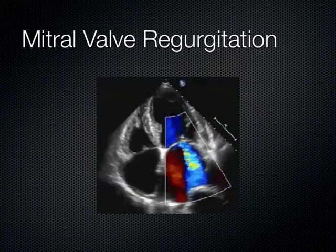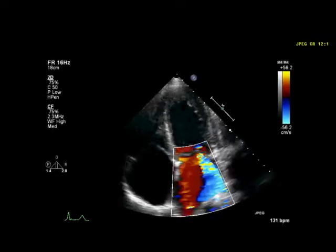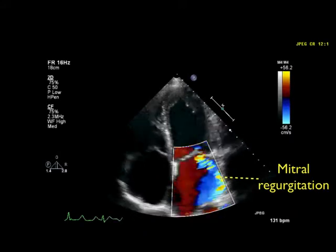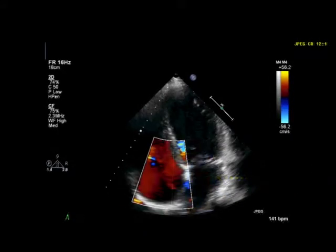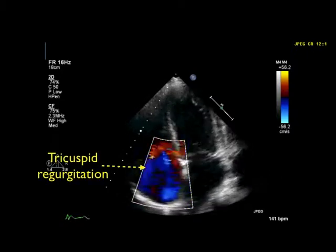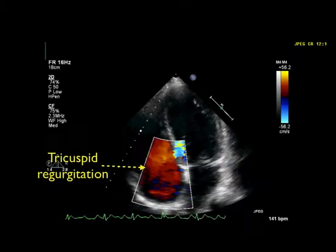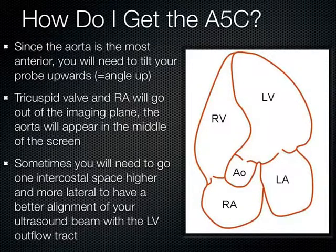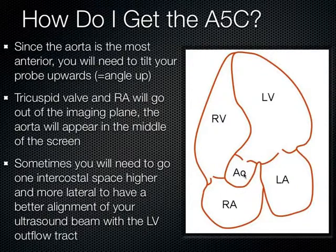The more parallel you get, the better Doppler works. This is just another example of a blue jet hitting the back wall of the left atrium. You can evaluate both the mitral and the tricuspid valves in the apical 4 chamber. To get the apical 5th chamber, you simply tilt the probe a little bit more anteriorly — I put air quotes around that because really it's just the aortic valve.